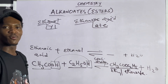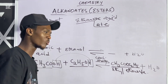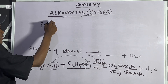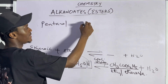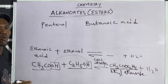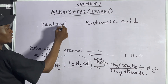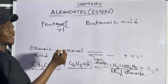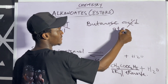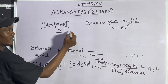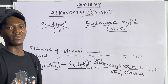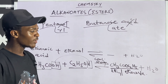Let's try another example: pentanol and butanoic acid. From the alkanol (pentanol), remove '-anol' and replace with '-yl' → 'pentyl.' From the alkanoic acid (butanoic acid), remove '-ic acid' and replace with '-ate' → 'butanoate.' So the ester formed is pentyl butanoate. That's how easy it is.